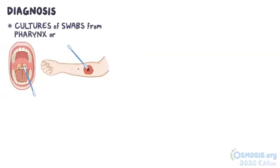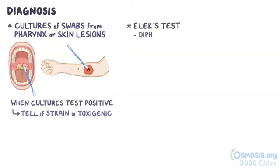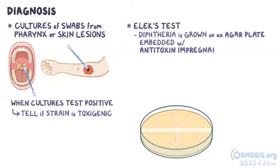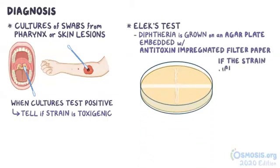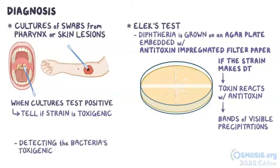Diagnosing diphtheria is mainly done by cultures of swabs from the pharynx or the suspected skin lesion to isolate C. diphtheriae. When the culture is positive, next you want to figure out if the C. diphtheriae strain in question is toxigenic. This is done by Elek's test, in which C. diphtheriae is grown on an agar plate embedded with an antitoxin-impregnated filter paper. If the strain makes DT, the toxin reacts with the antitoxin, resulting in bands of visible precipitation. Another method consists of detecting the bacteria's toxigenicity in its DNA using polymerase chain reaction (PCR).